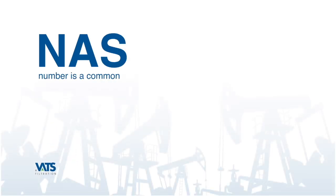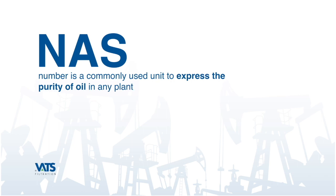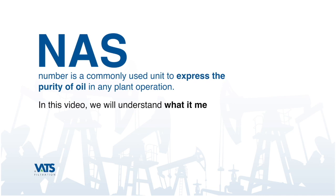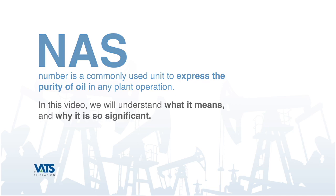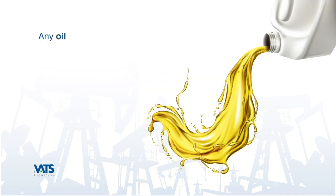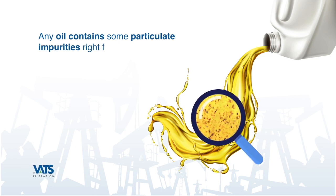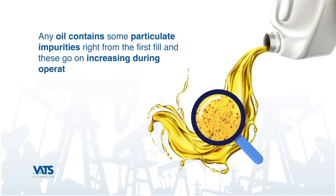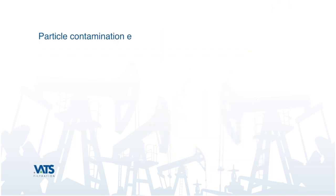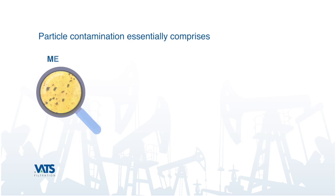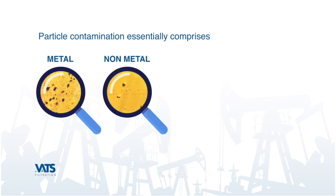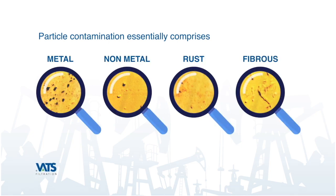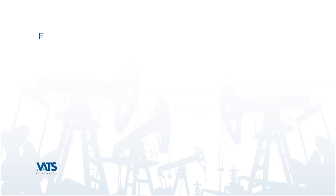The NAS number is a commonly used unit to express the purity of oil in any plant operation. In this video we'll understand what it means and why it's significant. Any oil contains some particulate impurities right from the first fill, and these go on increasing during operation. Particle contamination essentially comprises metal, non-metal, rust, and fibrous elements.